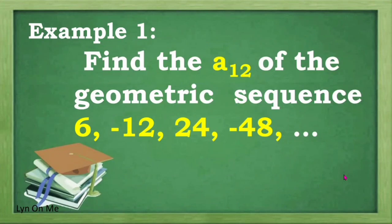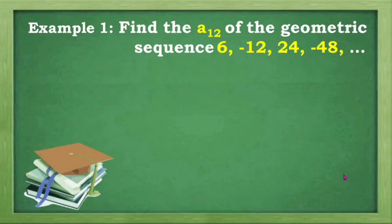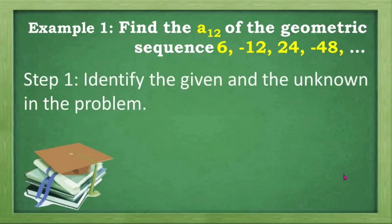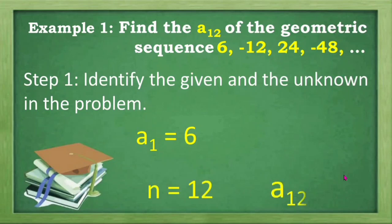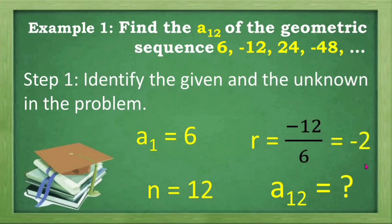Now let's have an example. Find A sub 12 of the geometric sequence 6, negative 12, 24, negative 48, and so on. To find that, identify the given and the unknown. Our first term is 6, the number of terms is 12, and we are asked to find A sub 12. Our common ratio is negative 12 divided by 6, which is equal to negative 2.